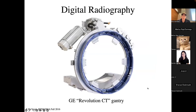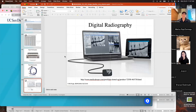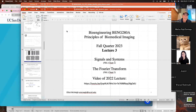That covers the basic X-ray physics. We're now going to move into linear systems — the signals and systems framework for imaging — to build groundwork in point spread functions, Fourier transforms, and related concepts. Any lingering questions about X-ray physics before we move on?